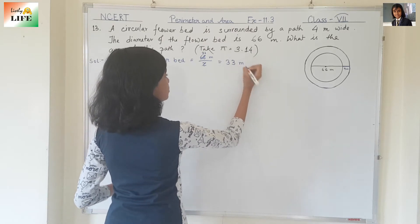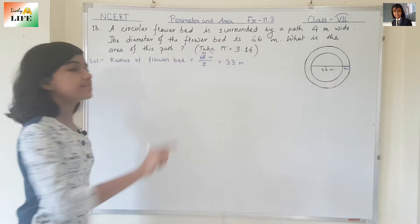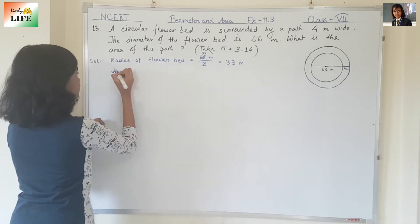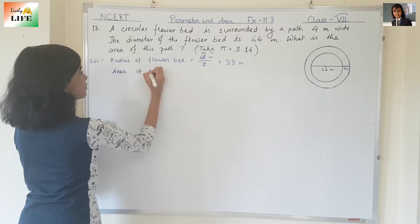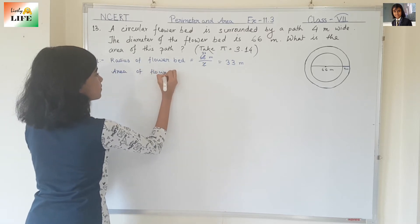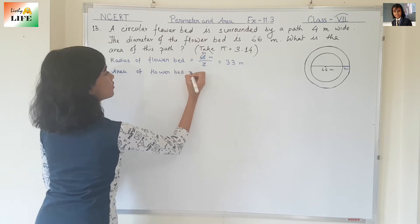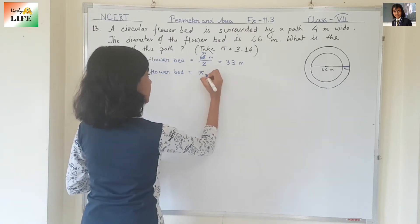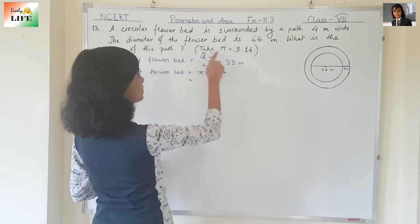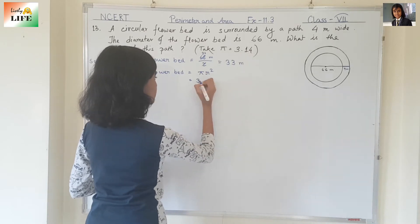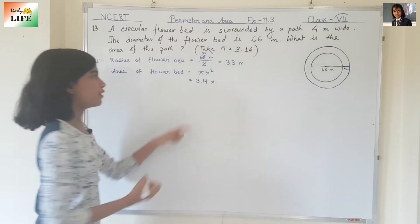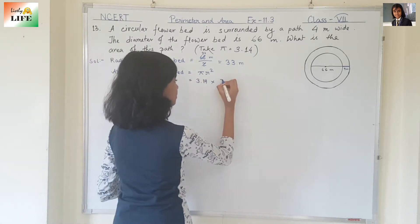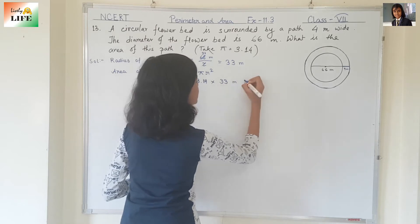66 divided by 2 gives us 33 meter. So the radius is 33 meter. Now let's find out the area. What is the formula for area of a circle? It is pi r squared. Pi is 3.14, and r is the radius, which we have already found — it is 33 meter.